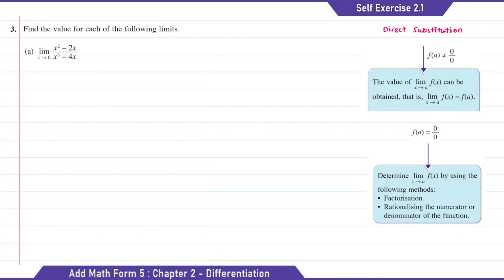Question 3: find the value for each of the following limits. For Question A, we're going to substitute x with 0 as x is approaching 0. The answer of this will be 0 over 0. To find the limit value for A, here we need to factorize the numerator and also the denominator.